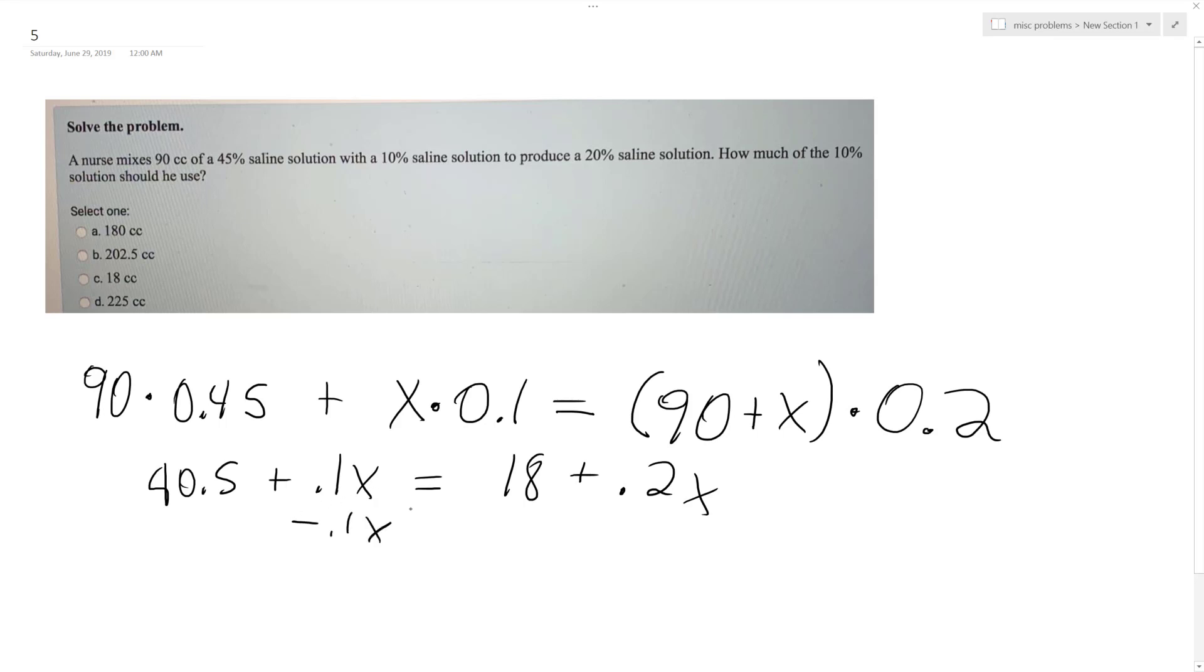We subtract 0.1x and subtract 18, so we end up with 0.1x equals 22.5. Now if we divide by 0.1, we move the decimal place over one, and we get x equals 225 cc's.